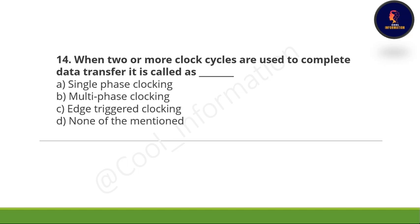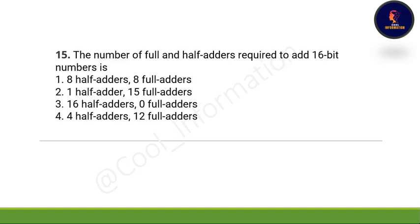Fourteenth question: When two or more clock cycles are used to complete a data transfer, it is called — option A, single-phase clocking; option B, multi-phase clocking; option C, triggered clocking; option D, none of them. The correct option is option B, which is multi-phase clocking.